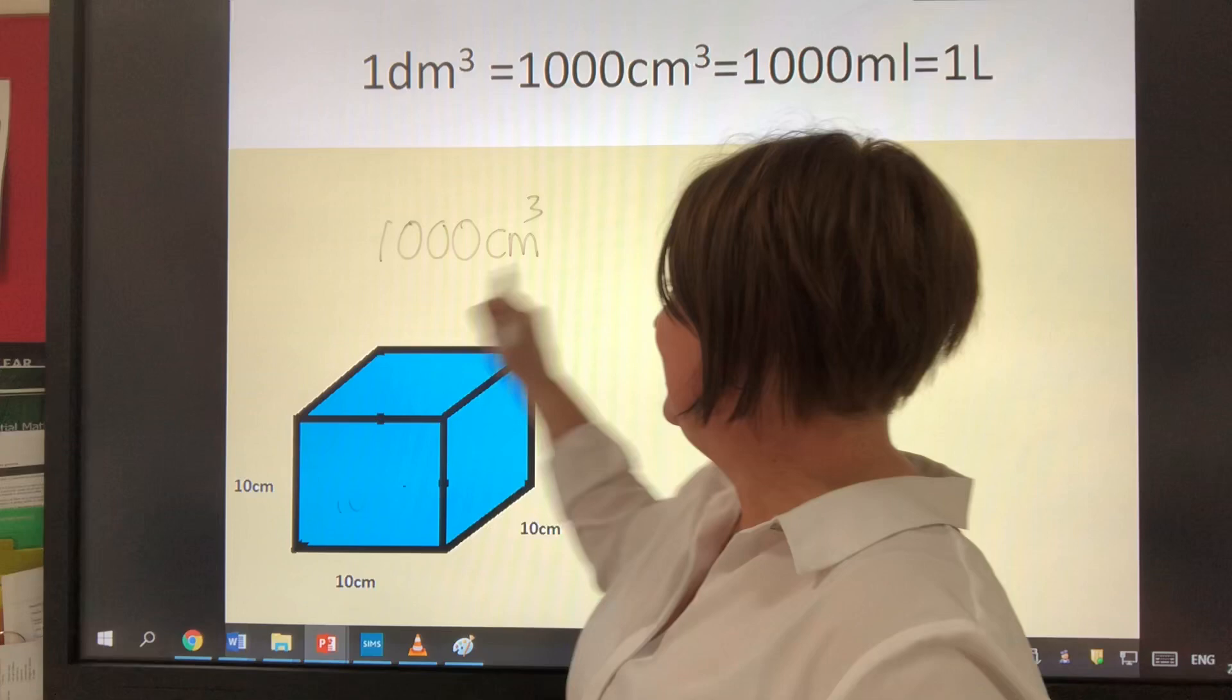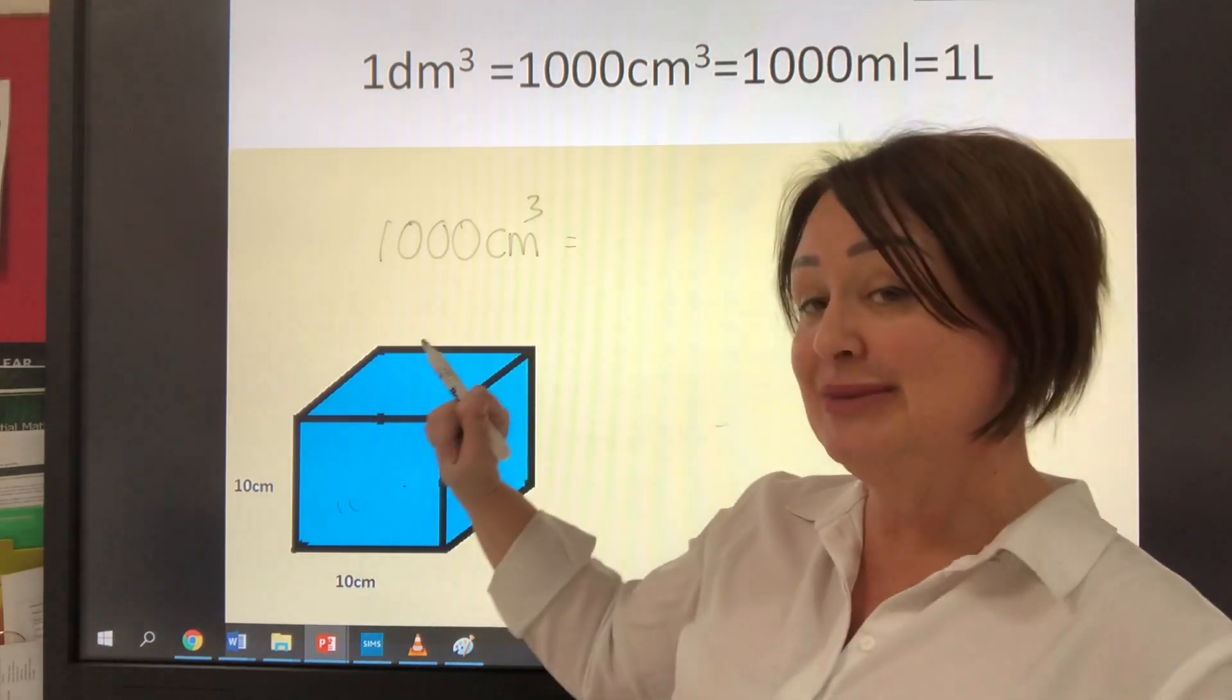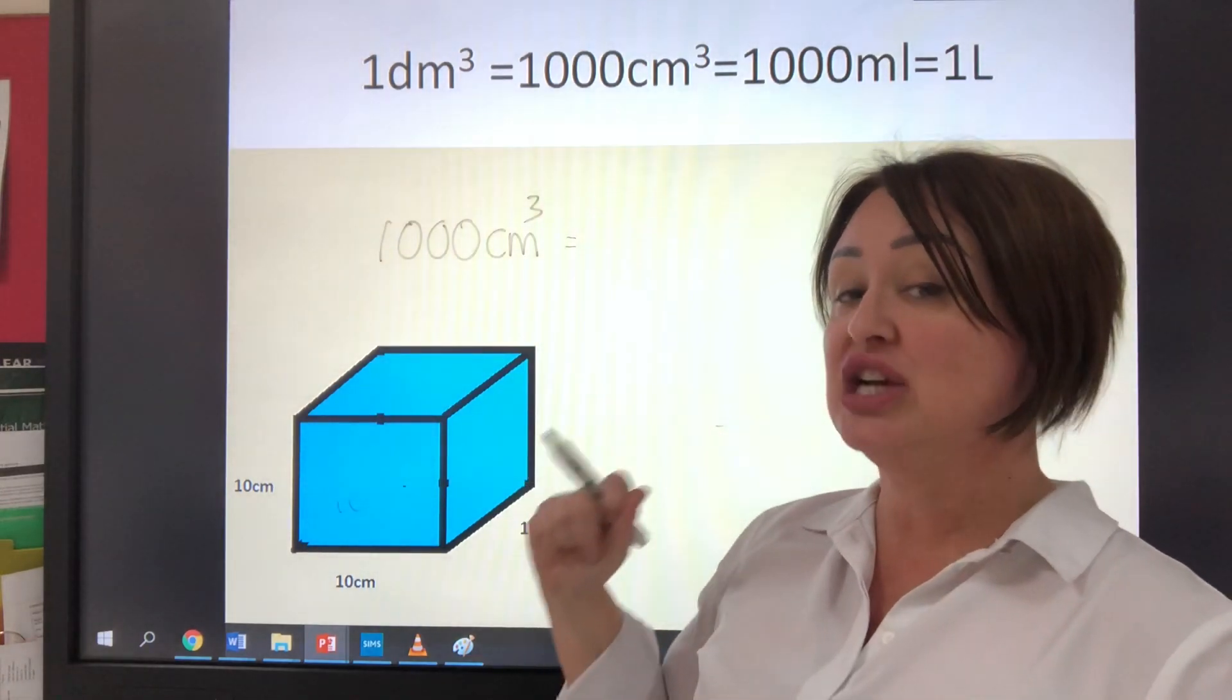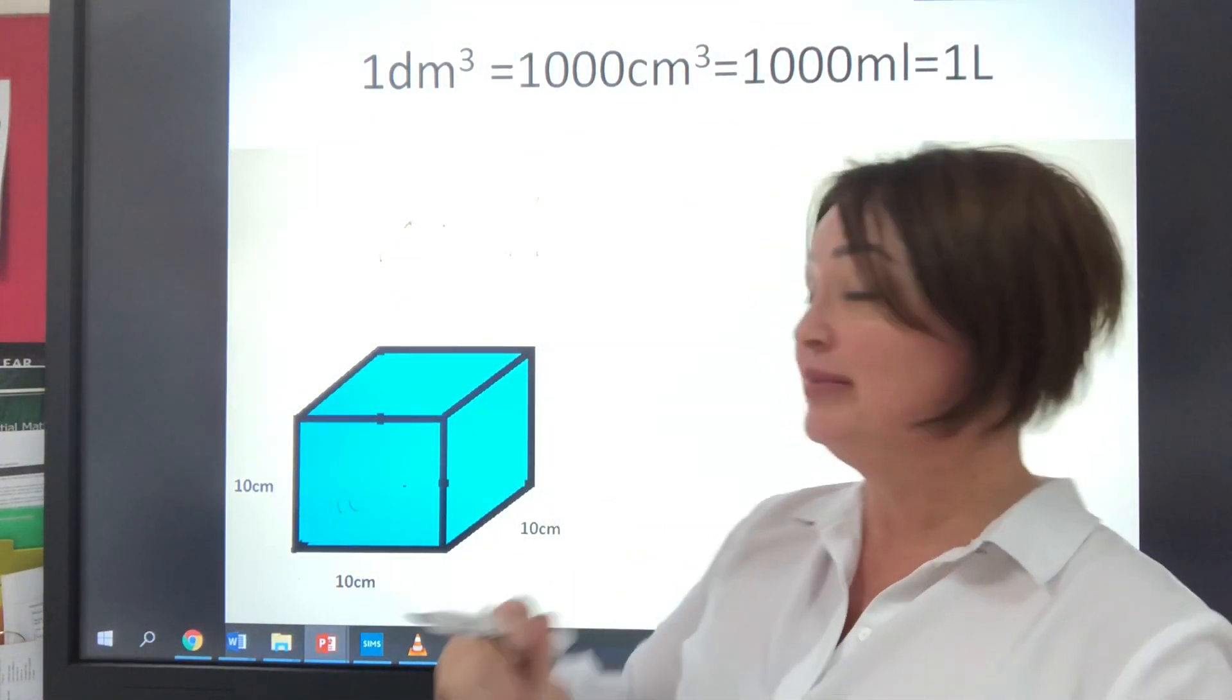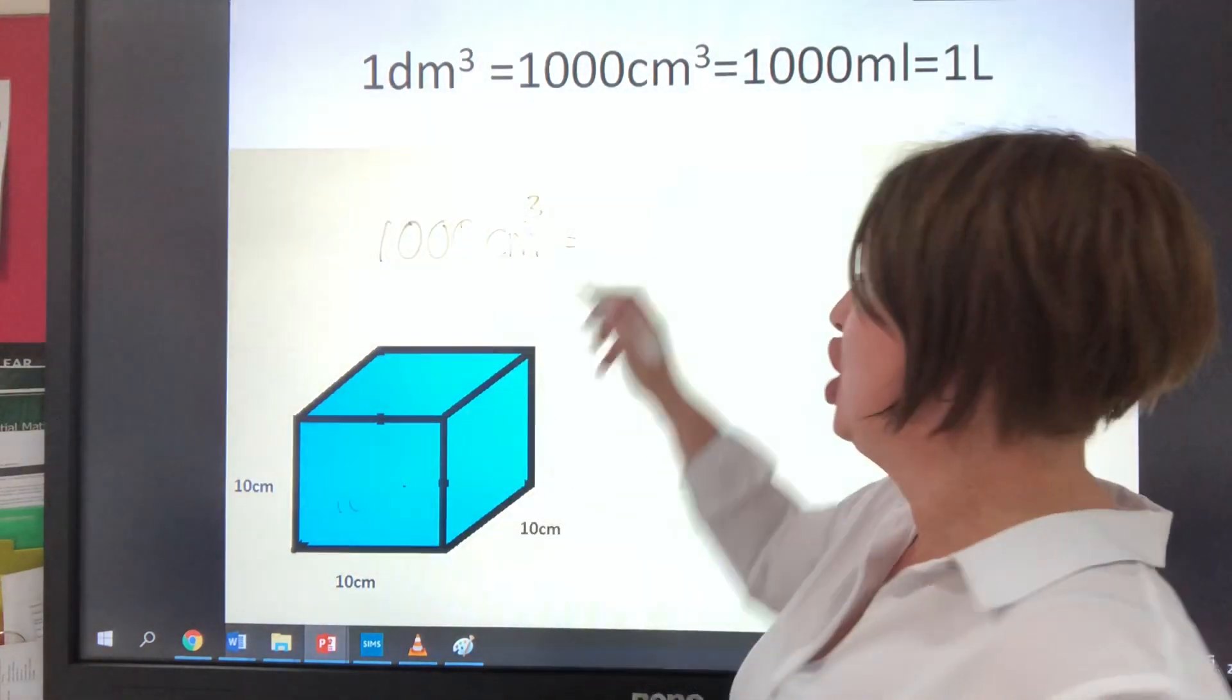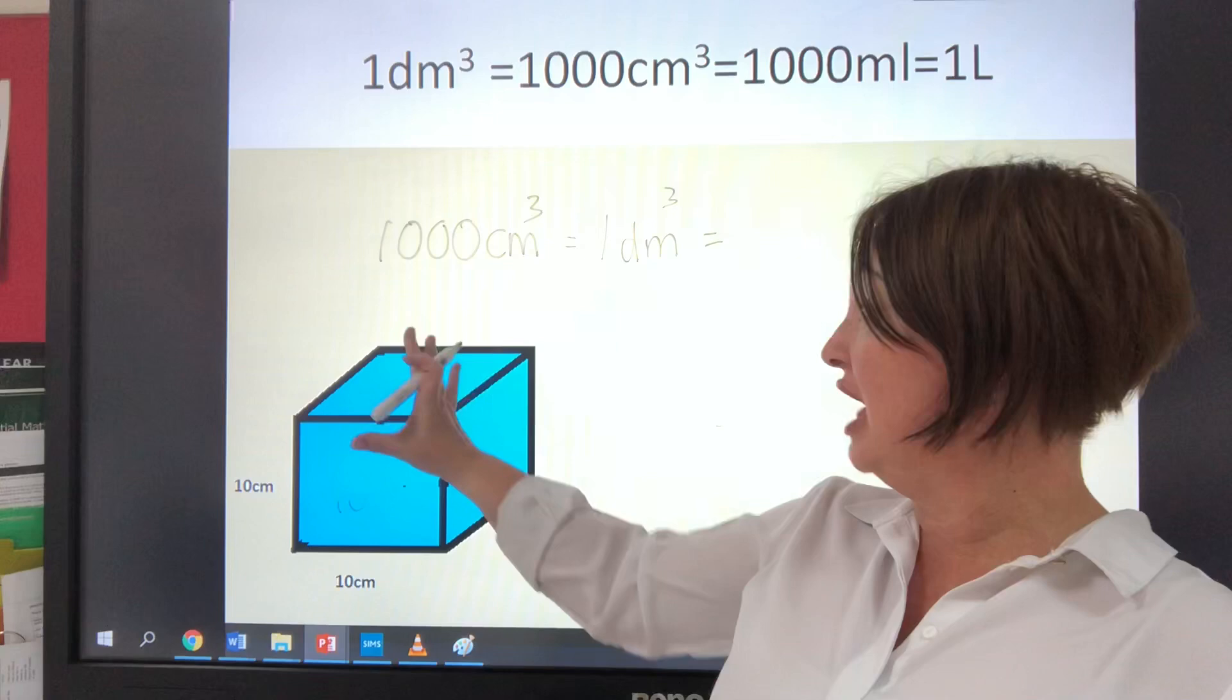So now I can easily write that in a different way. Instead of saying a thousand centimetres, I can say a decimetre. Because decimetre means tenth of a metre. And it's a tenth of a metre cubed. So that makes sense, I think, from there.